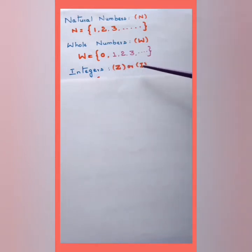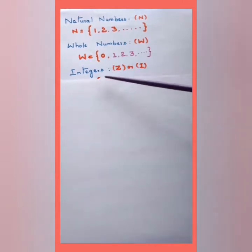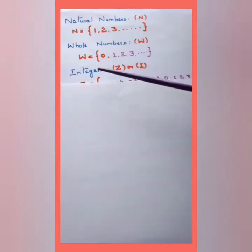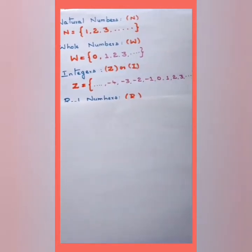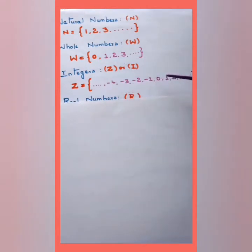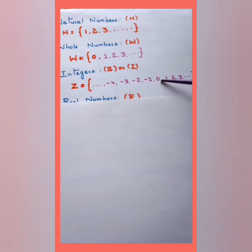Integers can be either positive or negative natural numbers along with whole numbers. We write the integer set as Z = {..., -3, -2, -1, 0, 1, 2, 3, ...}, including zero, positive natural numbers, and negative natural numbers. Next we'll move to real numbers.